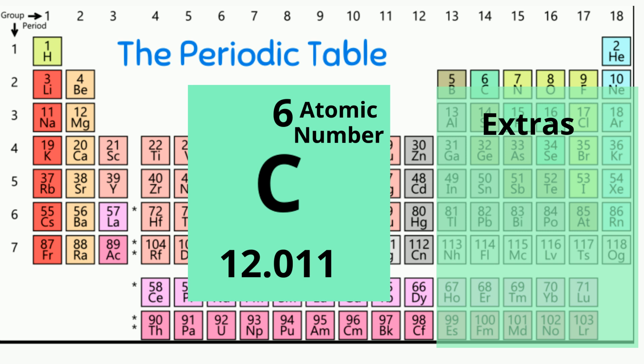Now a couple of extras. Notice the color of the background. There is usually a key on the periodic table that tells you what each color stands for. In this case the green is a non-metal. And also the atomic number can be a different color, in this case it is black and the key tells me that it is a solid.